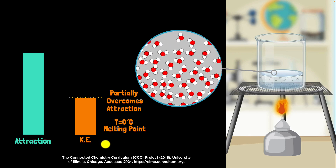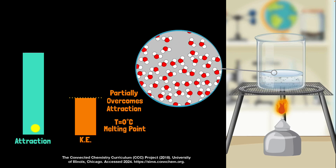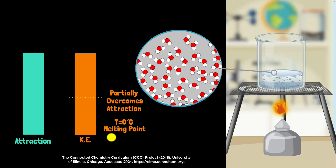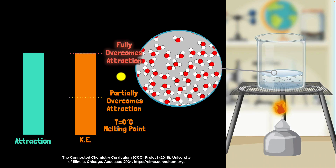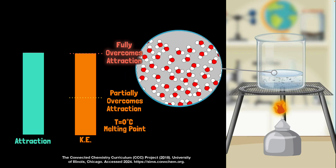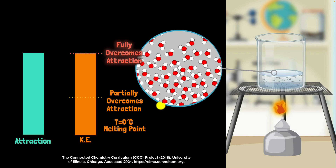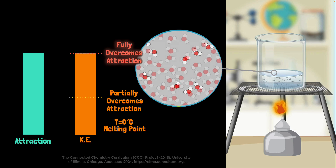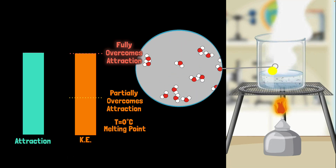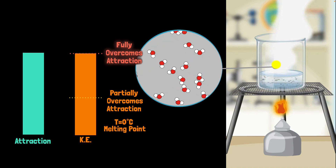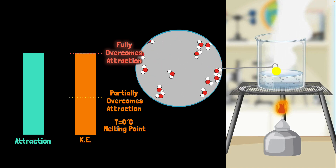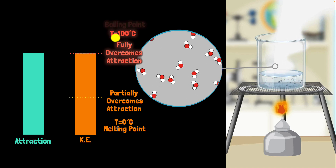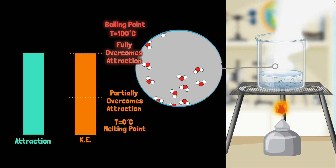Now let's keep heating it up further. Again, nothing happens to the force of attraction, but the kinetic energy will keep rising. And at one particular point, it will be high enough that it can fully overcome the force of attraction. And when that happens, these molecules will now be almost completely free from each other, freely moving about. In other words, our liquid starts turning into gas — water starts turning into steam. So the temperature at which this happens is what we call the boiling point. For water, that boiling point happens to be at 100 degrees Celsius.